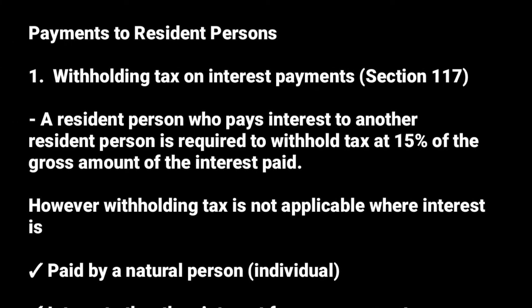Let's look at payments to resident persons when it comes to withholding tax. We shall start with interest payments. A resident person who pays interest to another resident person is required to withhold tax at a rate of 15% on the gross amount of interest paid. In case a resident of Uganda is paying interest to another resident, they are supposed to withhold tax of 15%. However, withholding tax is not applicable where interest is paid by the following.